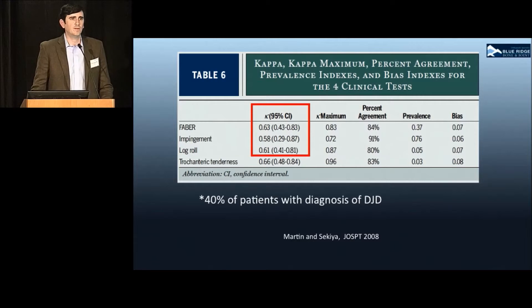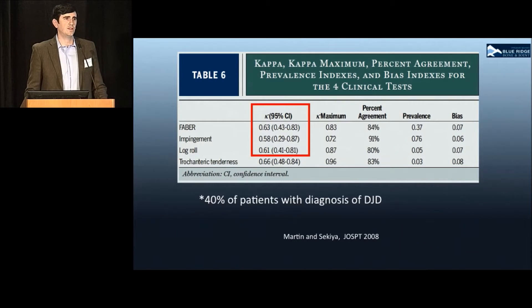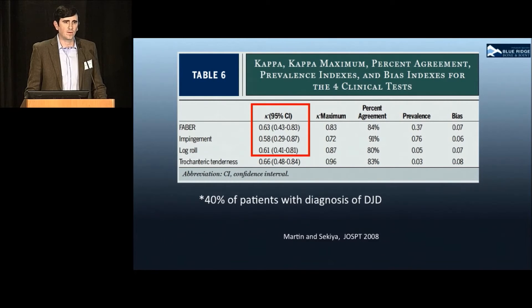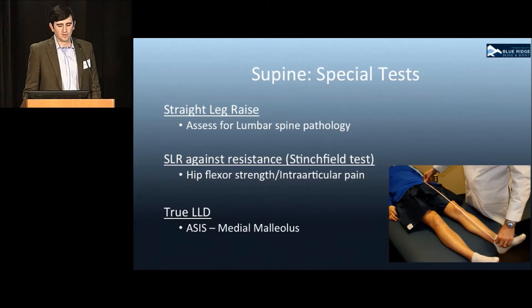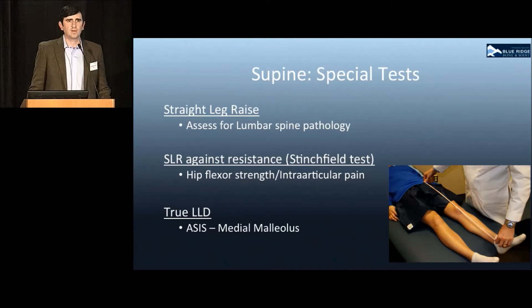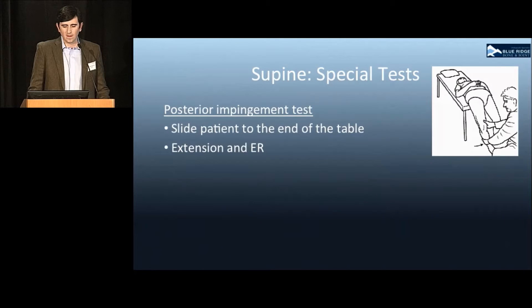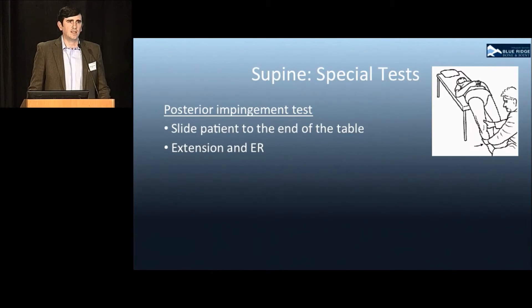These tests have been studied for inter-rater reliability, showing fair to moderate agreement. Of note, 40% of patients in that study carried a primary diagnosis of DJD, so results may not be applicable to all populations. Other tests in the supine position include a straight leg raise for lumbar spine pathology, a straight leg raise against resistance, and true leg length discrepancy, best measured from the ASIS to the medial malleolus.